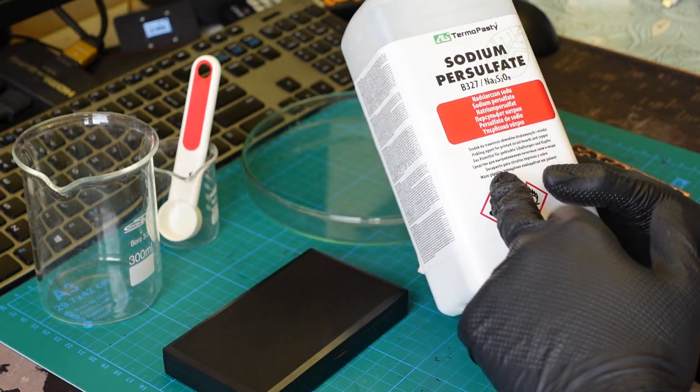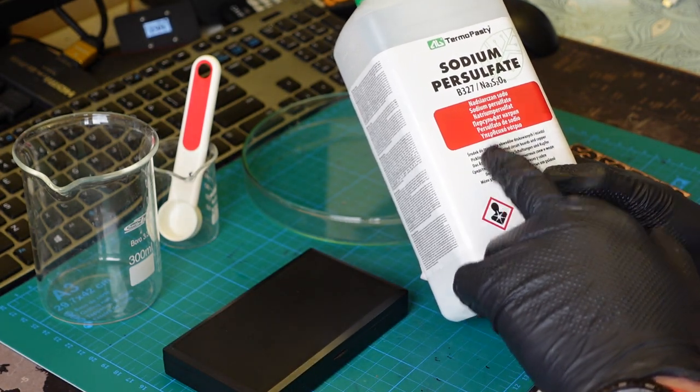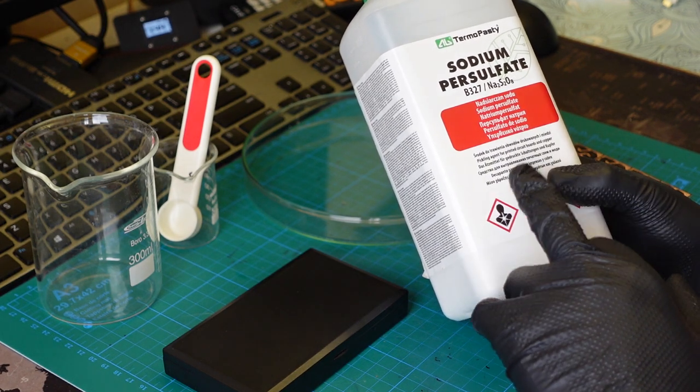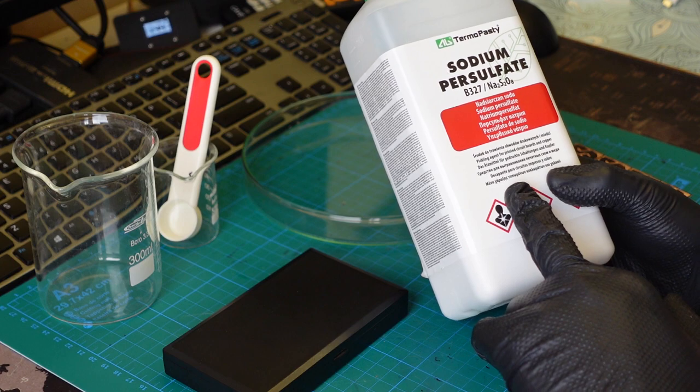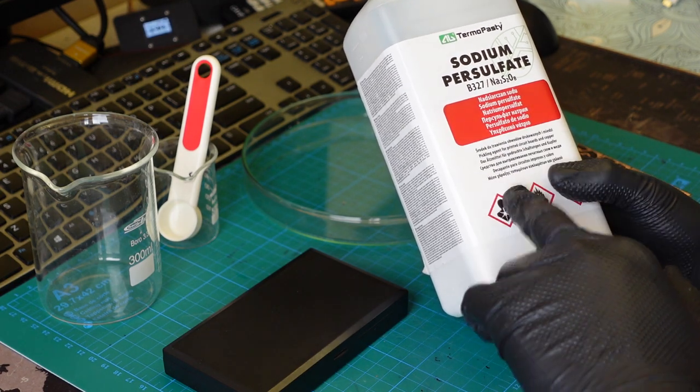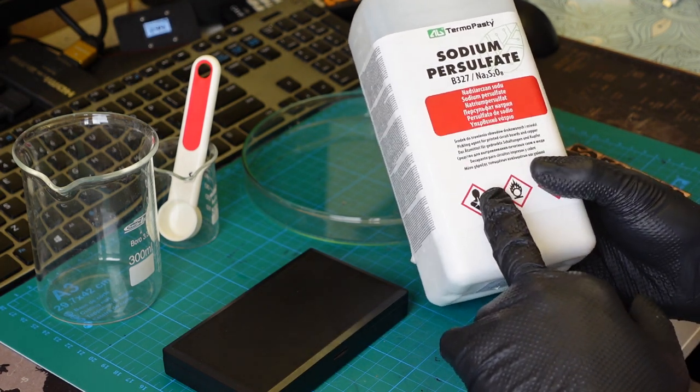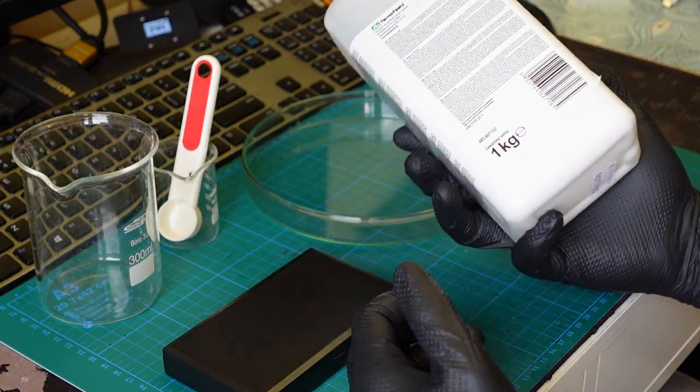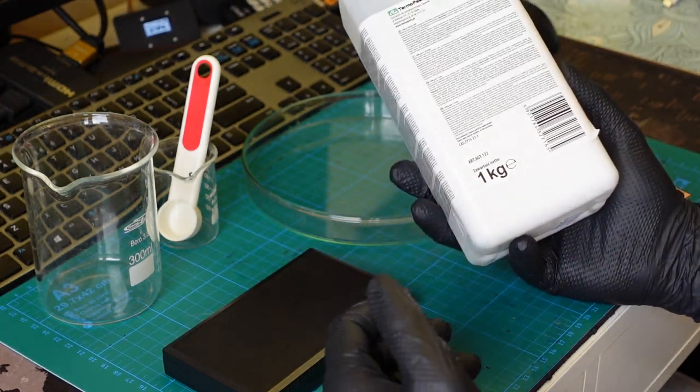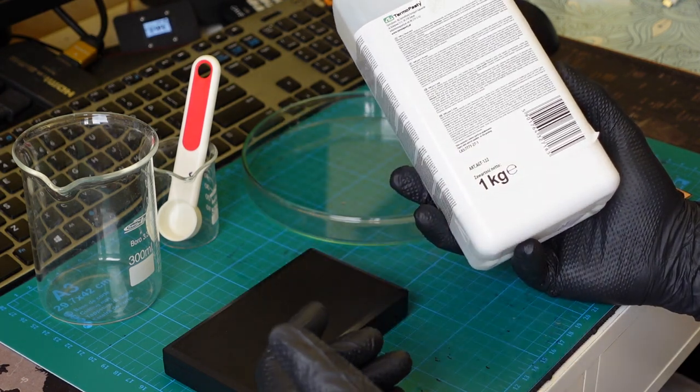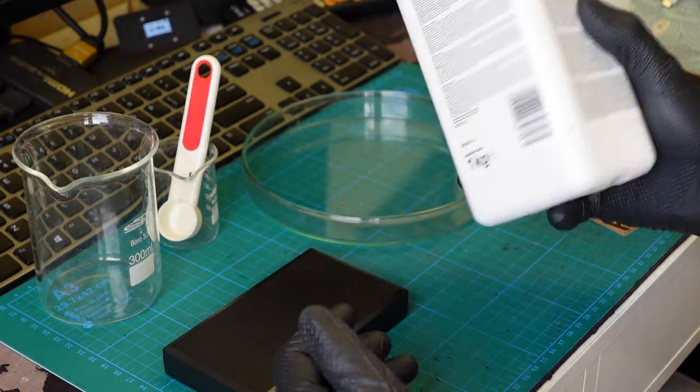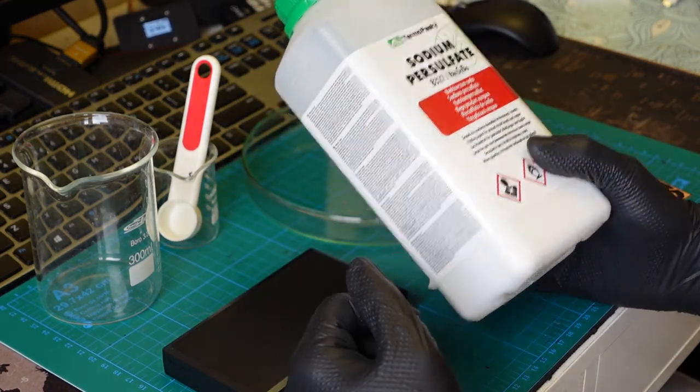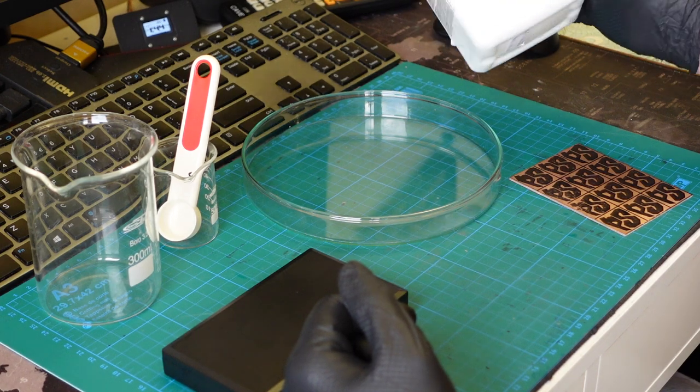Just get this sodium persulfate. This is actually sold as an etching agent. You can also buy it as a proper chemical reagent, which I also have, but this is like half the price. This is one kilogram, so slightly over two pounds, and it's gonna last quite a bit of time. Go with sodium persulfate, forget about the ferric chloride for now.